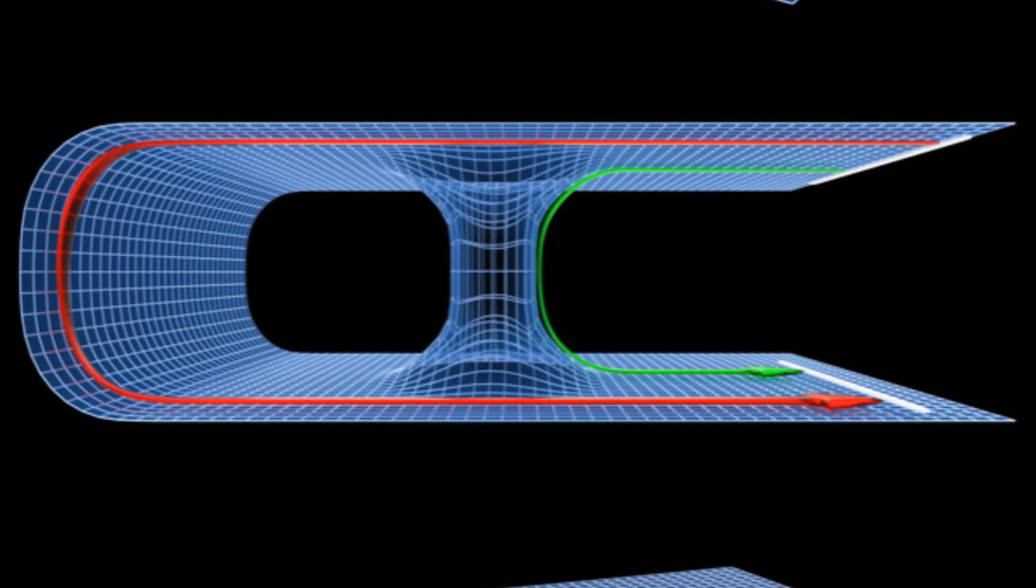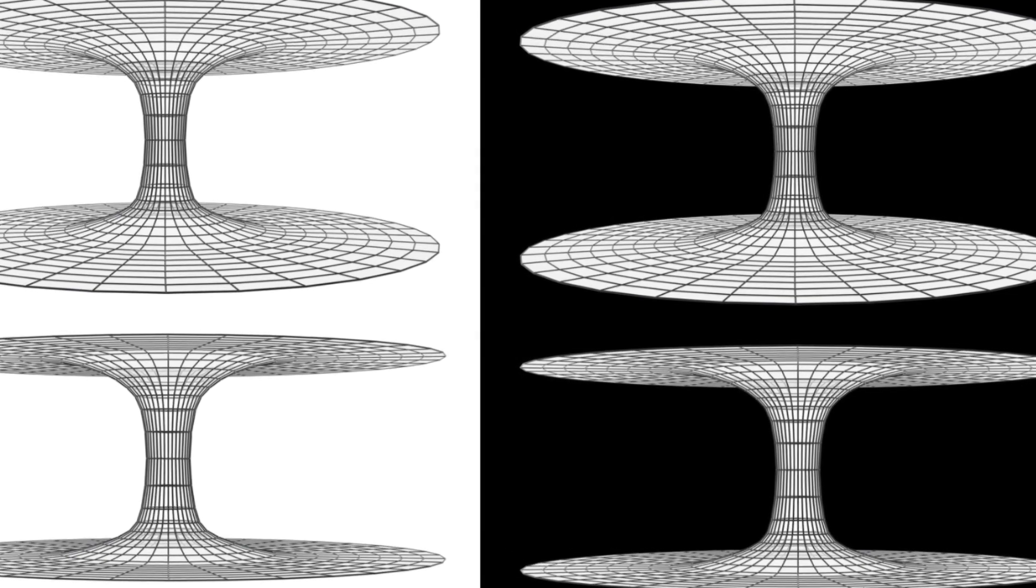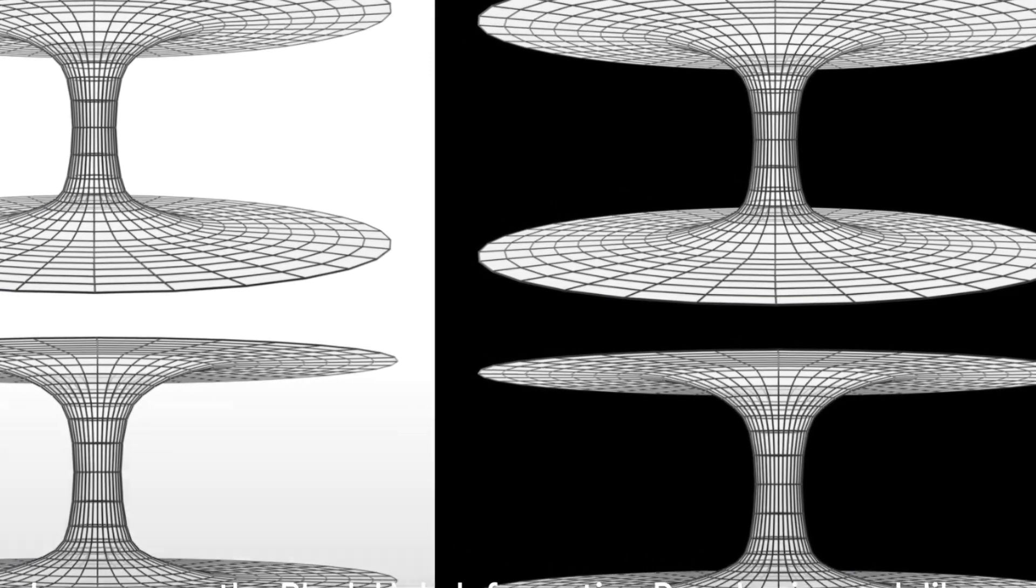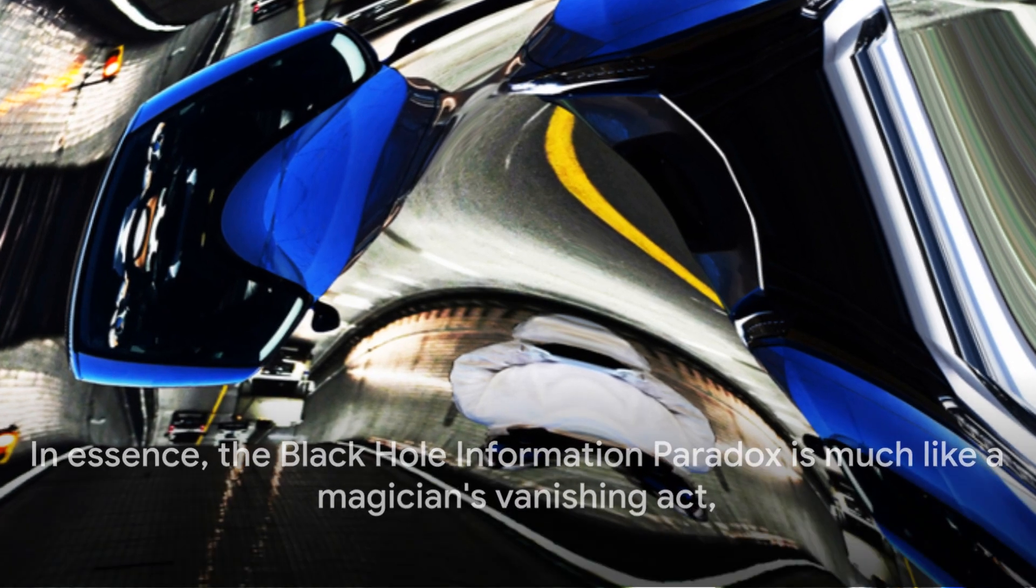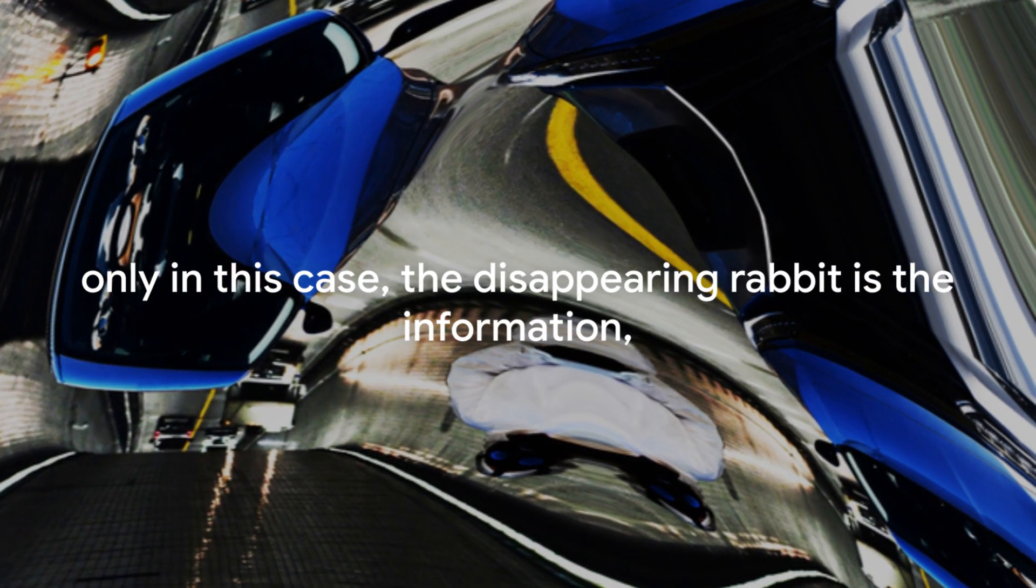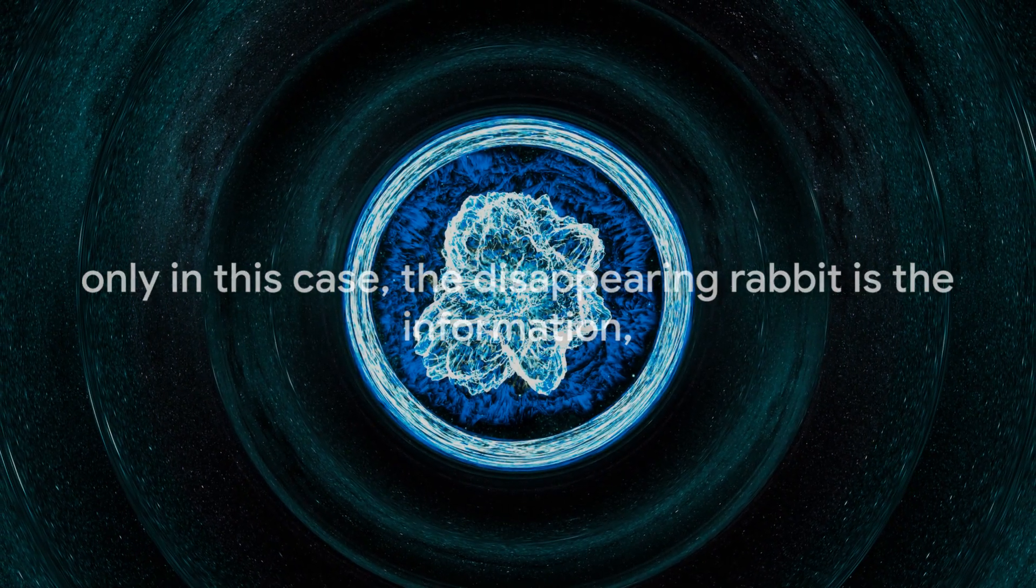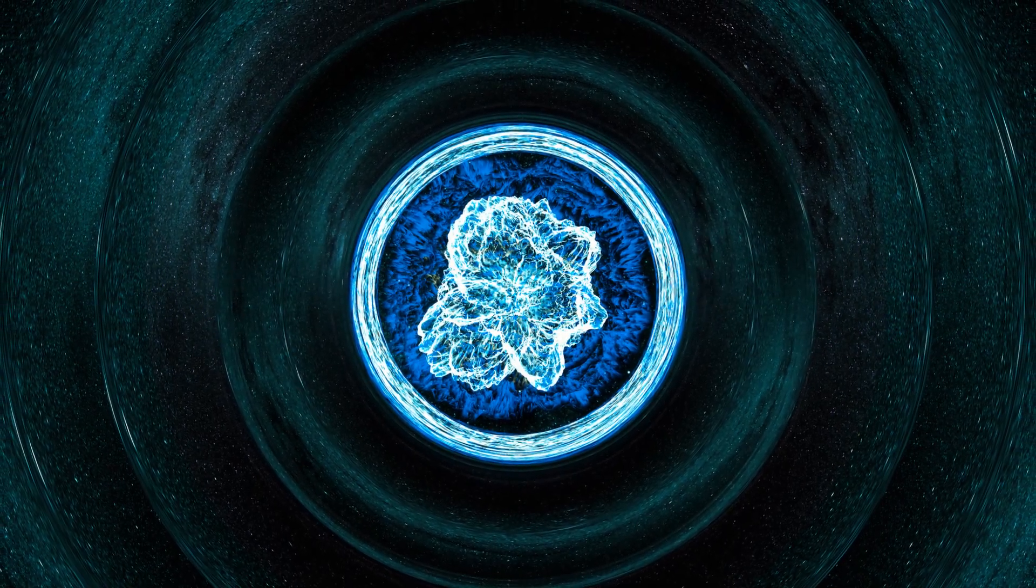In essence, the black hole information paradox is much like a magician's vanishing act. Only in this case, the disappearing rabbit is the information, and the hat is a cosmic beast millions of times heavier than the sun. The black hole information paradox, a cosmic mystery that continues to baffle the greatest minds in science.